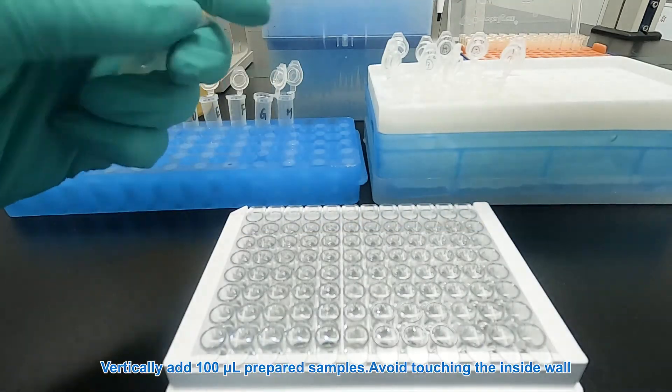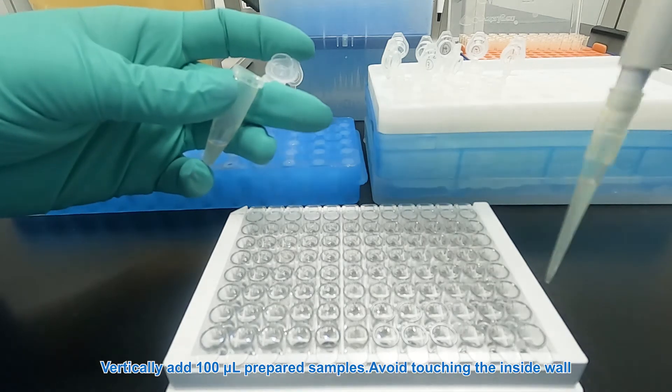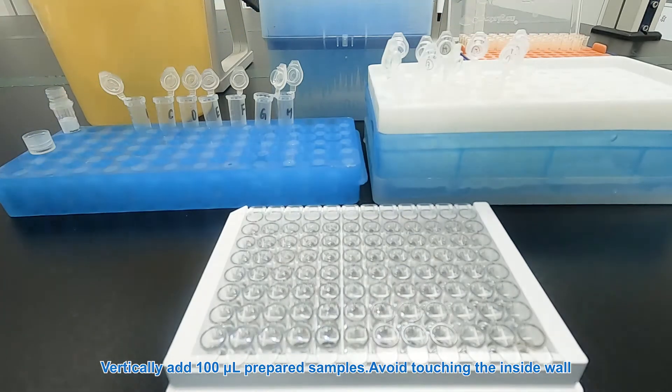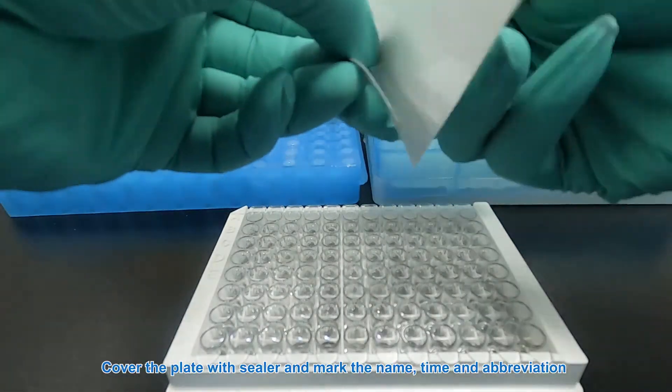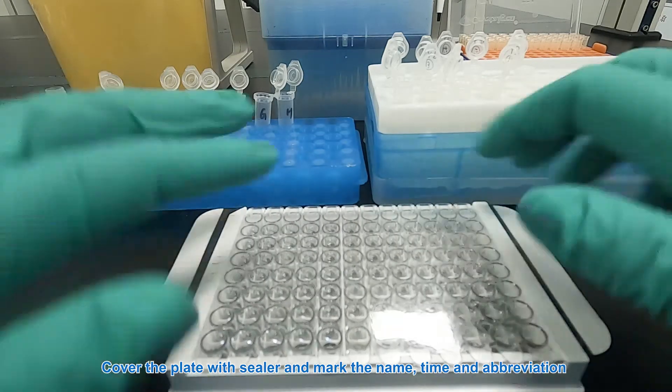Vertically add 100 microliters prepared samples, avoid touching the inside wall. Cover the plate with sealer and mark the name, time and abbreviation.